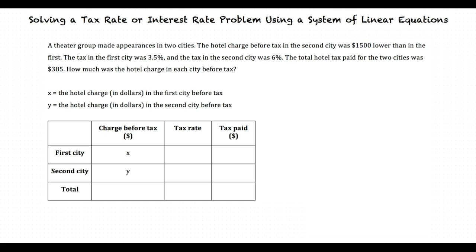By looking at the problem, we can see that the tax in the first city was 3.5%, and the tax in the second city was 6%. We know that to find the tax paid on each hotel, we need to multiply the hotel charge before tax by its tax rate. So that means our tax paid for the hotel in the first city would be 0.035X, and for the hotel in the second city would be 0.06Y.